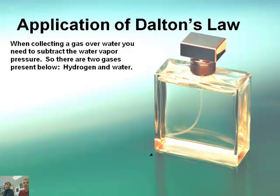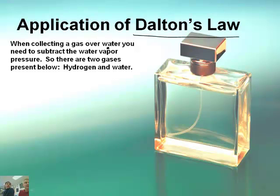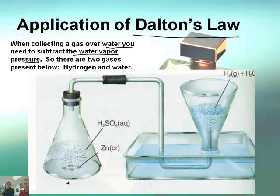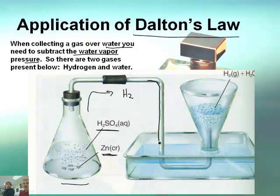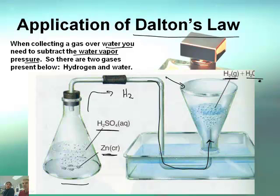We need to end with one thing. One of the most important applications of Dalton's Law is when we're collecting a gas over water, which we'll be doing in experiments. When you collect a gas over water, you need to subtract what's called the water vapor pressure because there are two gases. In this flask, we have sulfuric acid and zinc. When they react, they produce hydrogen gas, which goes through the tube. But the flask contains both hydrogen gas and water vapor.